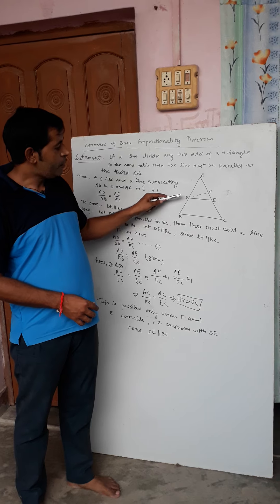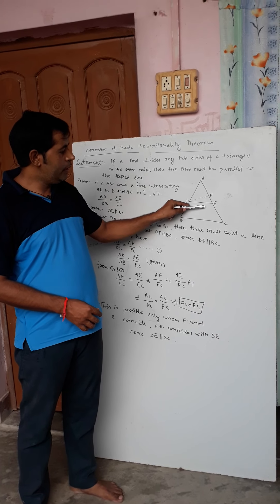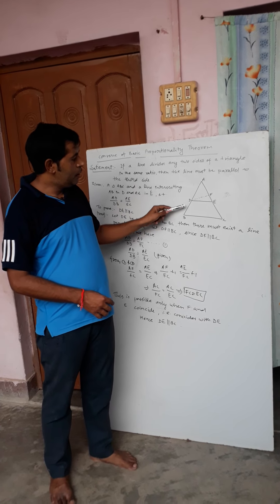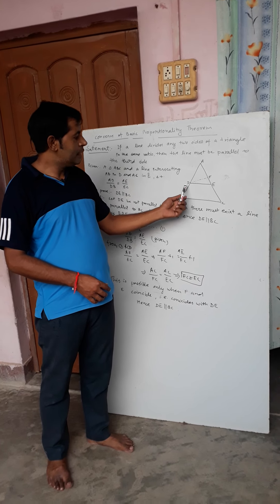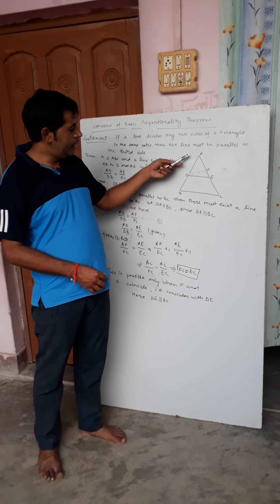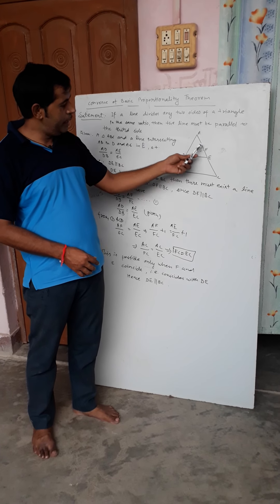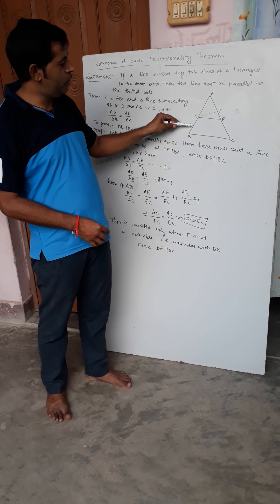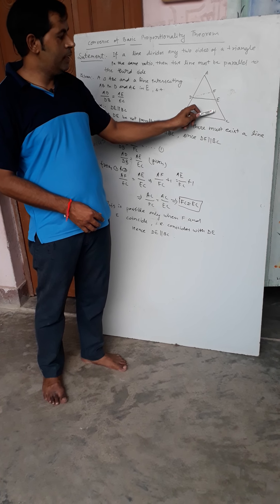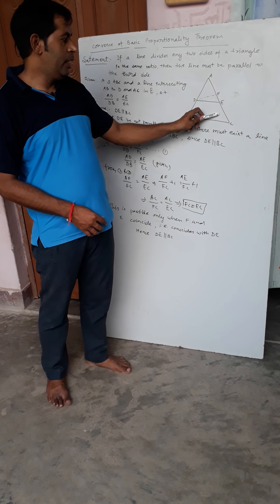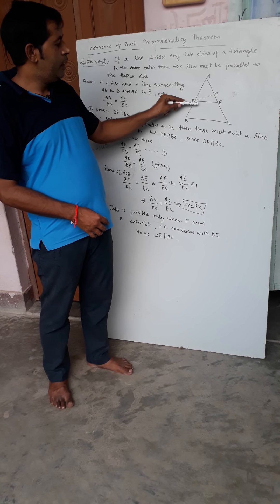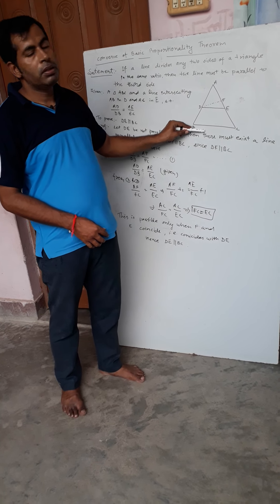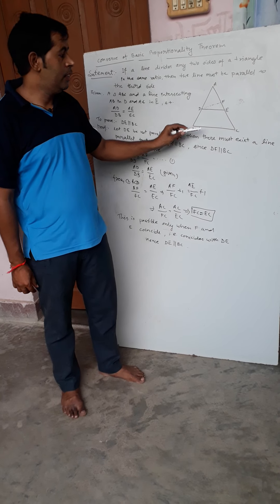Here, there is a line DE and it divides the other two sides of a triangle, that is AB and AC, in the same ratio. That means AD upon DB and AE upon EC is given. Then we have to prove that DE is parallel to the third side, that is BC.